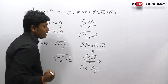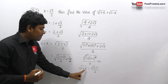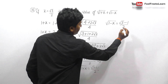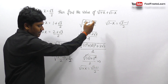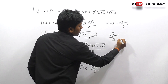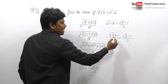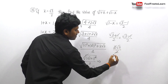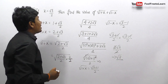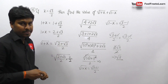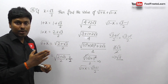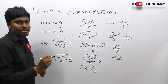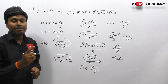Since √(1+x) = (√3+1)/2, by symmetry √(1-x) = (√3-1)/2. Adding both: (√3+1)/2 + (√3-1)/2. The +1 and -1 cancel, leaving 2√3/2 = √3. The answer for question number 18 is √3.